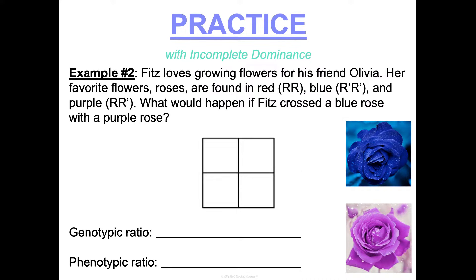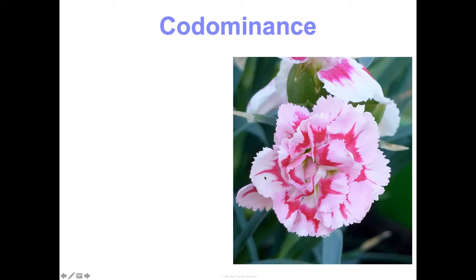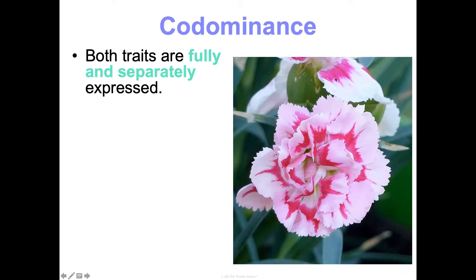Another example: Fits loves growing flowers for his friend Olivia, whose favorite flowers are roses found in red, blue, and purple. What would happen if you crossed a blue rose with a purple rose? Try that Punnett square on your own.